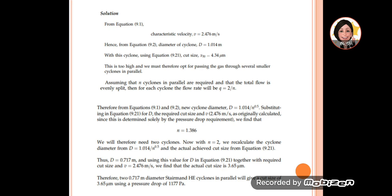If n is 2, the diameter becomes 0.717 meter. The V remains the same because it's not affected by diameter. Using the Stokes 50 equation (9.21), we get 3.65 micrometer. To answer the question, we need 2 Stamen high efficiency cyclones in parallel with diameter 0.717 meter.